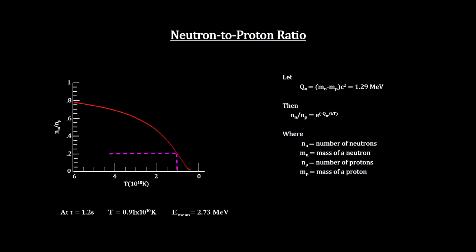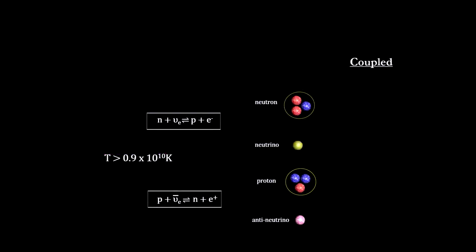One, without neutrino interactions, the ratio of neutrons to protons froze. Computations show that at the time of neutrino decoupling, the ratio would have been one neutron for every five protons. This neutrino decoupling process would have lasted around one second.